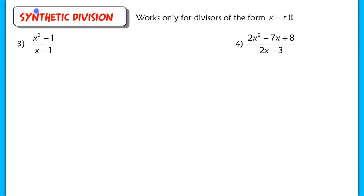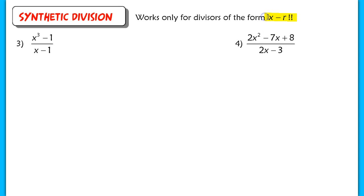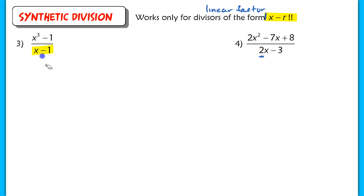Next up, we have synthetic division, which you're going to really like. If you don't remember it from last year, it's a very quick process. Unfortunately, this only works when you have a divisor of the form x minus r. The first problem here is in that form, but the second one is not, so we'll need to do something slightly different. It only works for linear factors with a lead coefficient of 1.